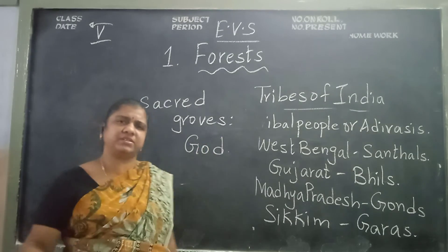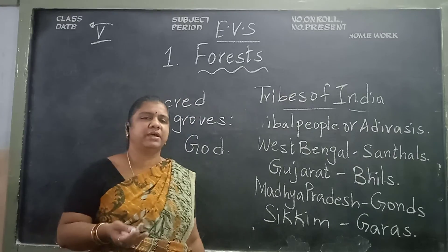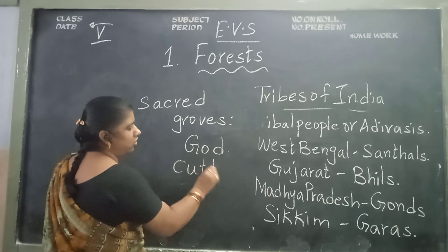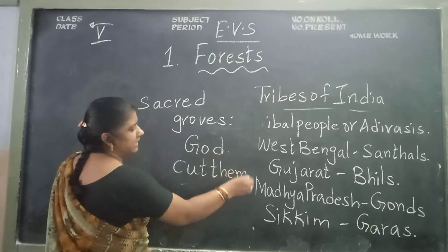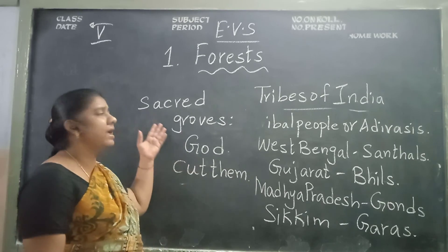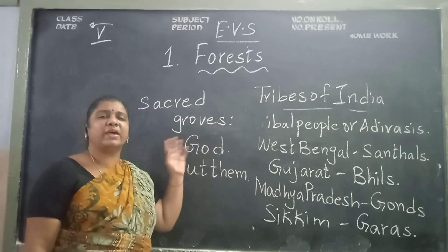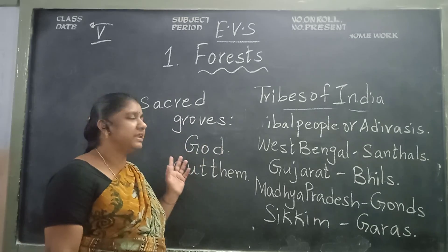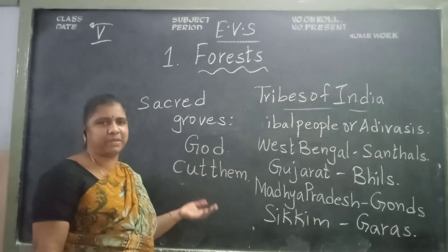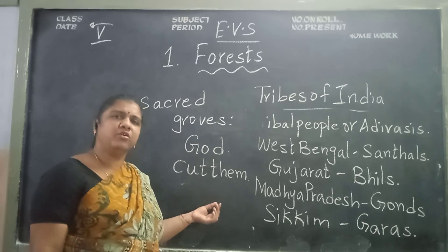The tribal people pray for the trees and protect their groves. They do not allow anyone to cut them. Certain plants are kept separate and are called sacred groves. These include a variety of plants dedicated to worship and certain medicinal plants. All the people do not allow others to cut trees from the forest.